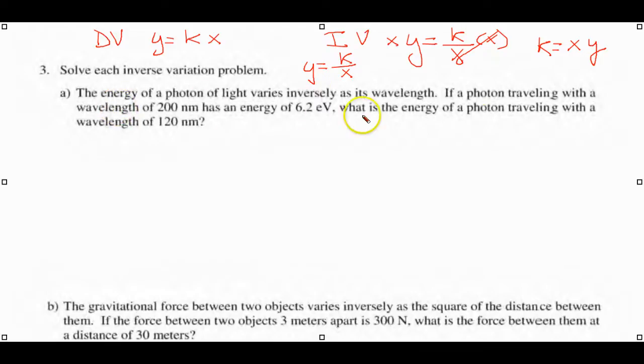Let's read this and see if we can set up an equation in this form using the letters that they ask us in this example. The energy of a photon of light, we're calling that E, varies inversely, so we use this relationship, K over its wavelength W. Now take this information and put it in this formula to see if you can find out what K is. Remember, K is X times Y, or E times W. The energy is 6.2, and the wavelength is 200.